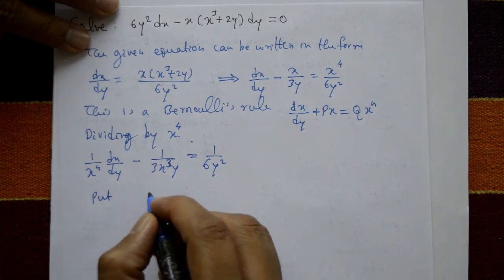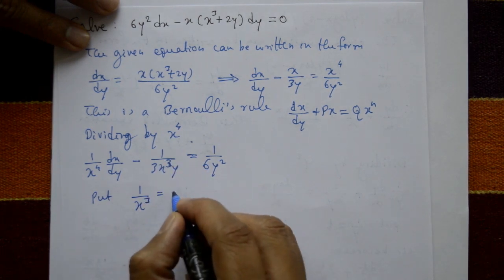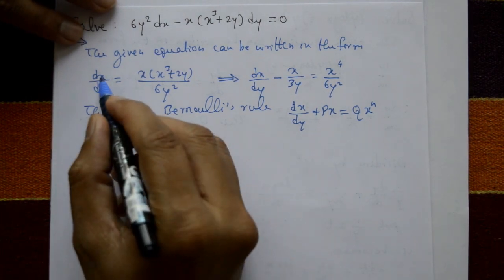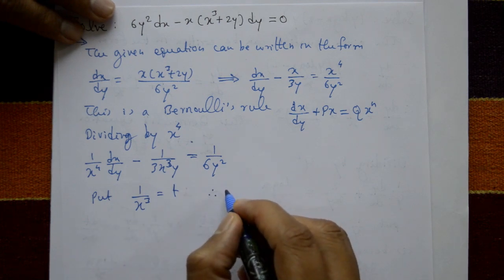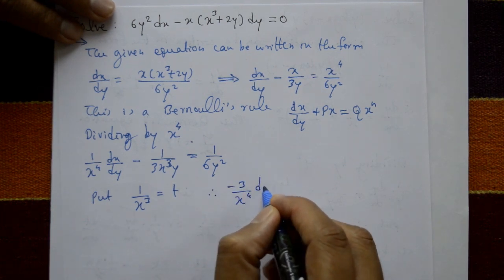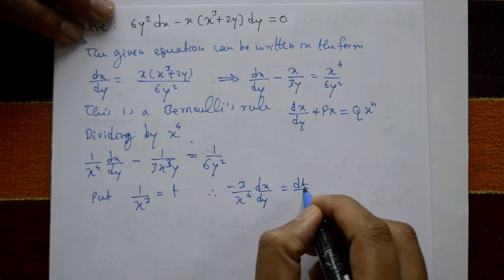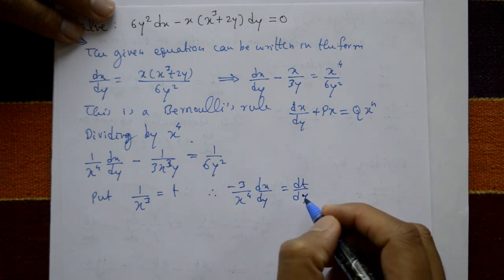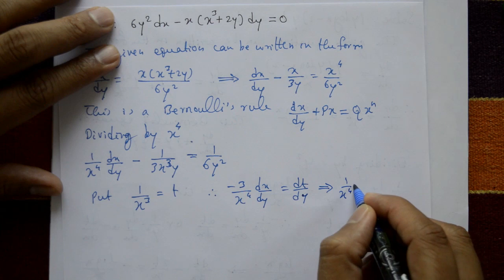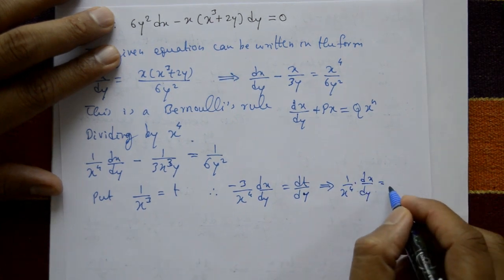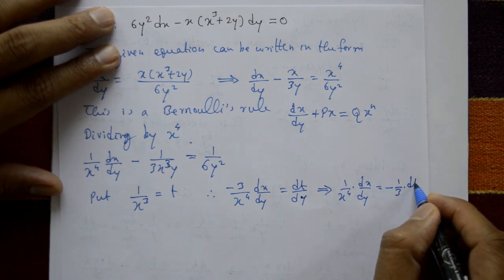Now put 1 upon x cubed equal to t. Take x variable, so 1 upon x cubed equals t. Differentiating: minus 3 by x to the 4 times dx by dy equals dt by dy. Therefore, 1 upon x to the 4 times dx by dy equals minus 1 by 3 times dt by dy.